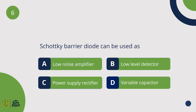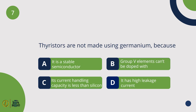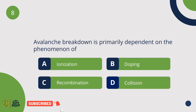Schottky Barrier Diode can be used as a low-level detector. Thyristors are not made using germanium because it has high leakage current. Avalanche breakdown is primarily dependent on the phenomenon of collision.